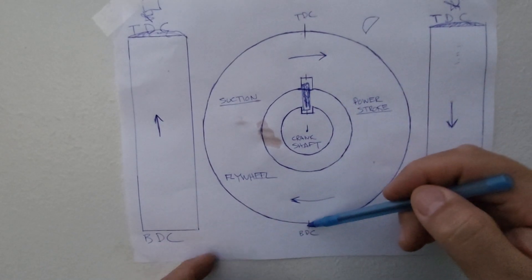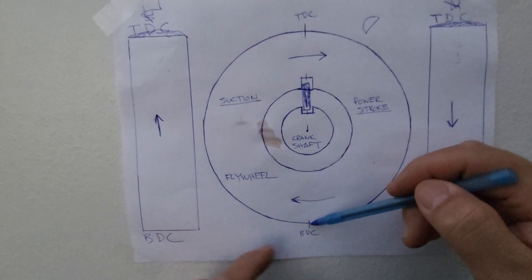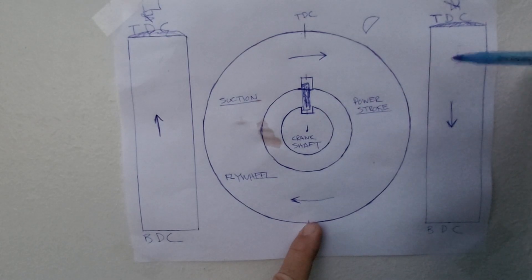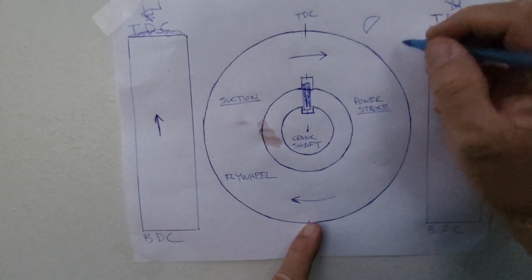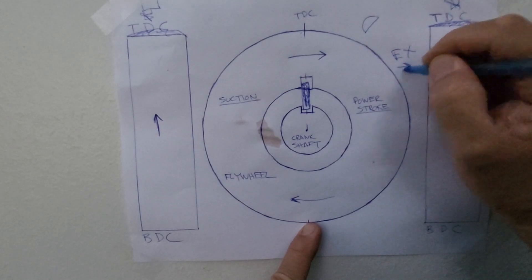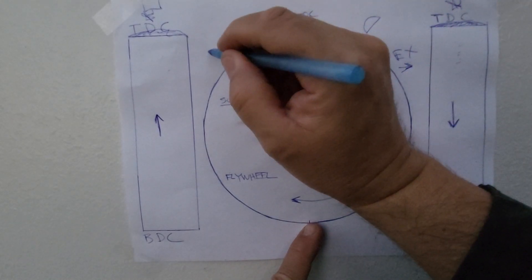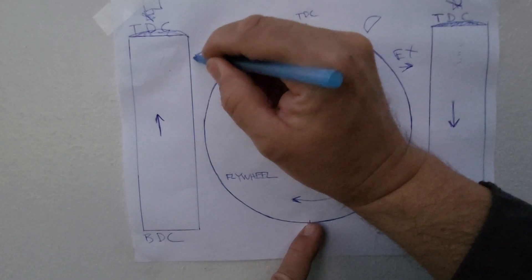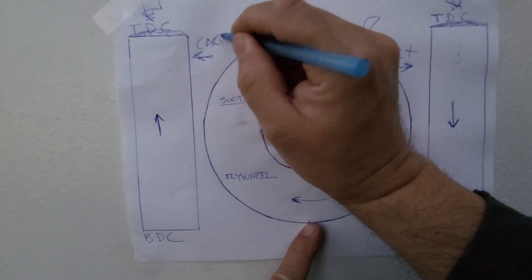Now once it's at the bottom dead center, that means the exhaust has also exited from the muffler, which is usually on this side. The carburetor is on this side.